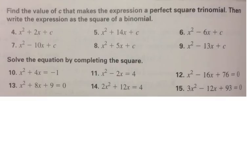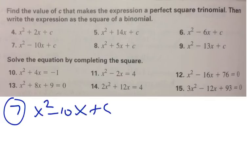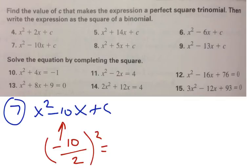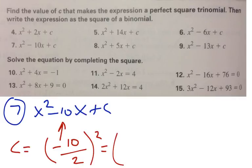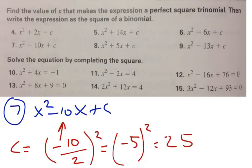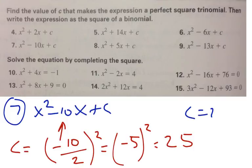Let's do a couple more. Number 7: I have x squared minus 10x plus C. C is whatever is next to the x, divided by 2, to the second power — make sure you keep the parentheses. So it's negative 10 divided by 2, which is negative 5, to the second power. Negative 5 squared is positive 25. Any negative number raised to the second power is positive. So C is 25.